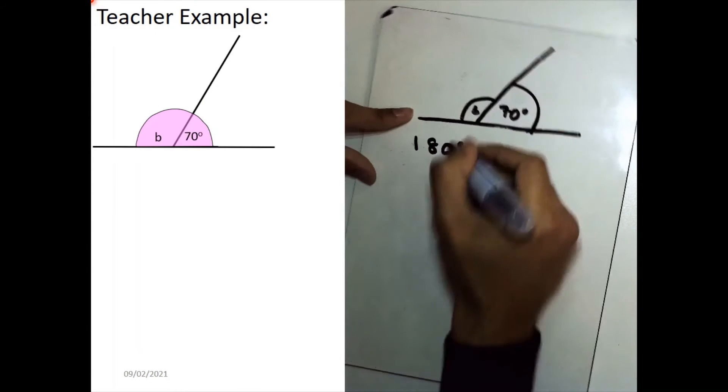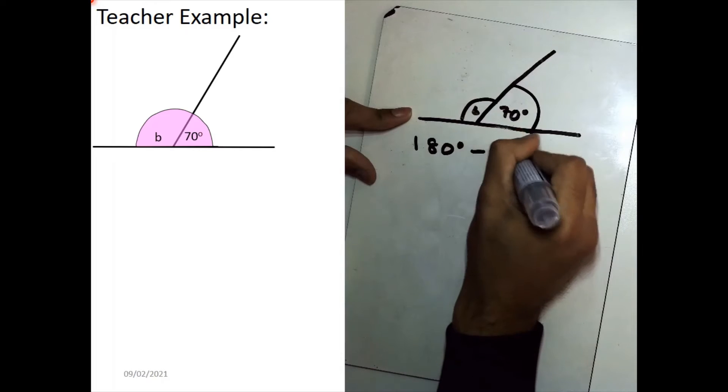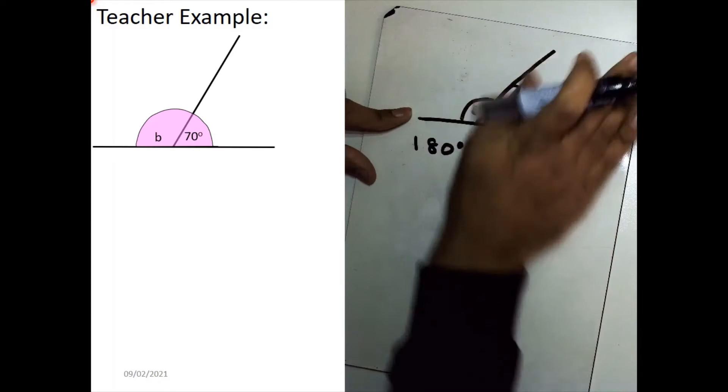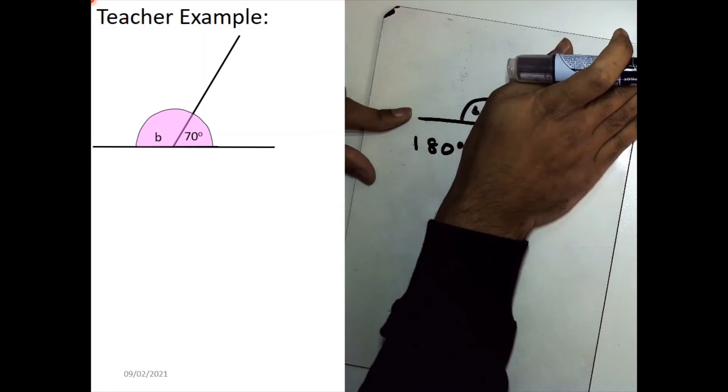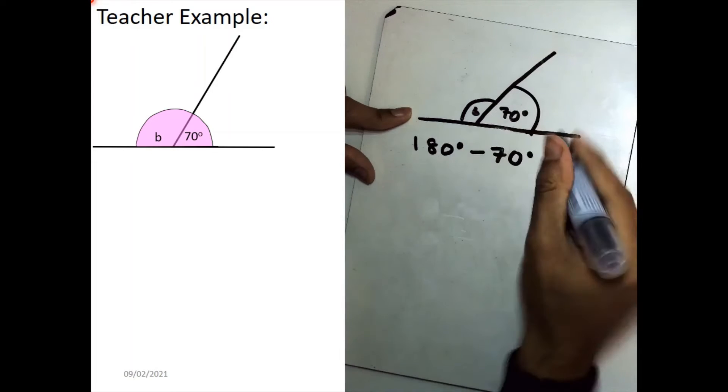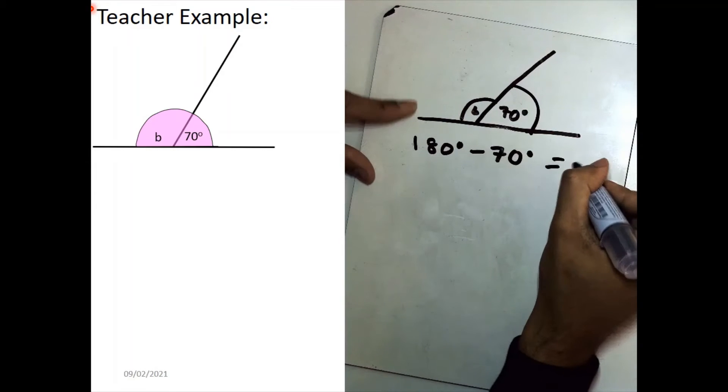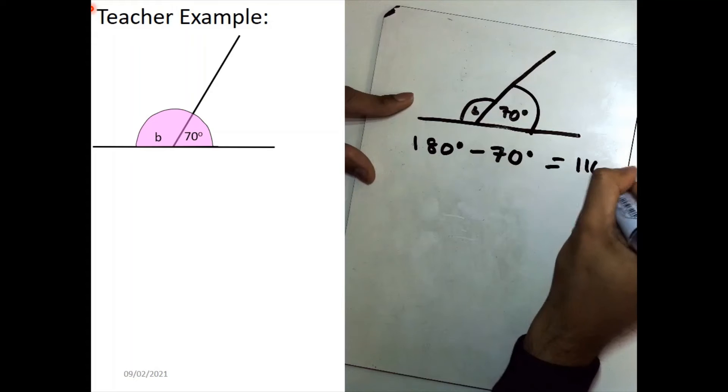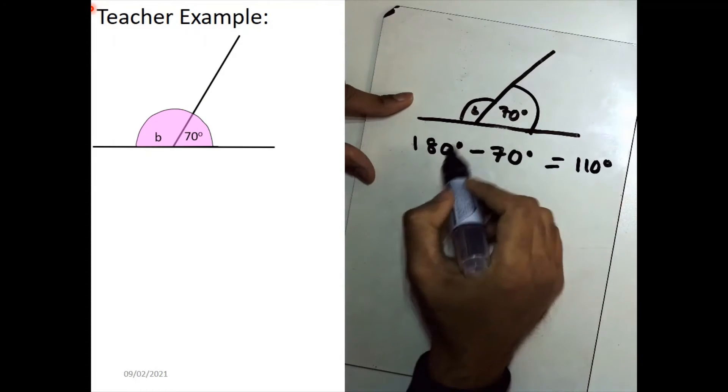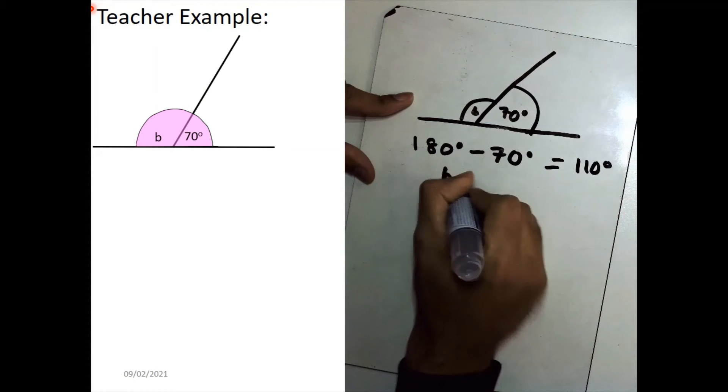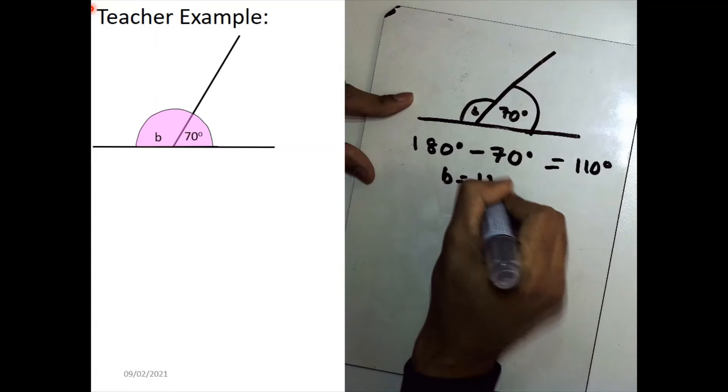So that's the same thing as taking away 70 degrees. Because look, I'm basically just taking it away. I'm taking the 70 degrees away. And that will give us an angle of 110 degrees. So our angle B is going to be equal to 110 degrees.